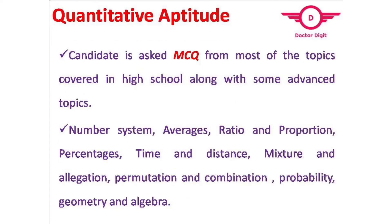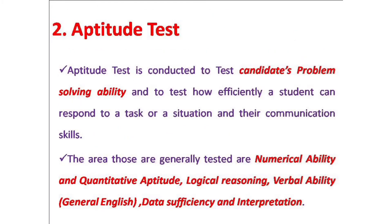Quantitative aptitude is the area where a candidate has to concentrate. Most probably, the questions will be in multiple choice questions (MCQ). Number system, averages, ratio and proportion, percentages, time and distance, mixture and allegation, permutation and combination, probability, geometry, and algebra will be covered in the quantitative aptitude area. After completing the pre-placement talk, they next come for aptitude test. Mostly IT, ITeS, and BPO companies prefer aptitude test.